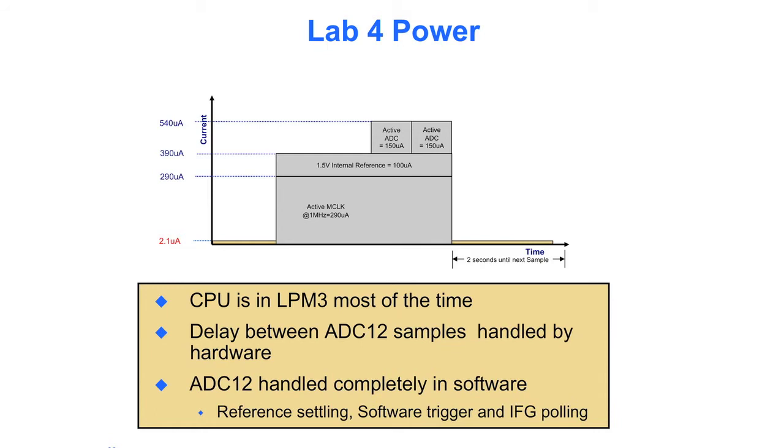The delay between the ADC samples gets handled by the hardware. But what we're doing here is we're turning on the reference, we're waiting in software, we're turning on the conversion, we're waiting in the conversion, we're doing the processing. All of that's done in software. So that's going to cause us to burn some additional current that we may not need to do. We can take a look at that in Lab 5.